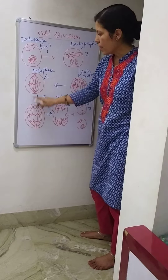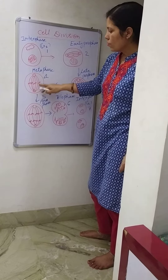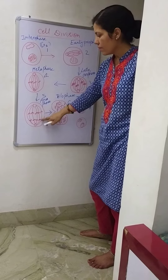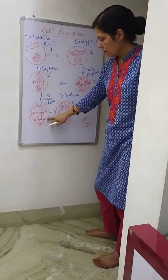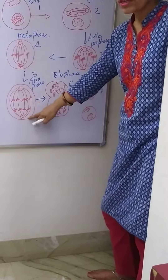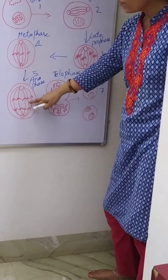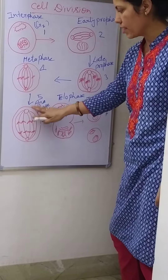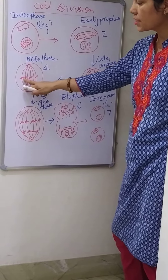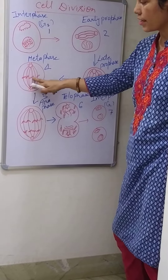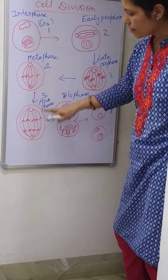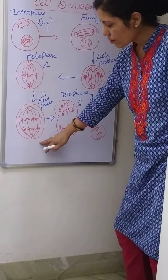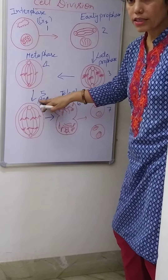Now the chromosomes divide into two parts. One part goes to one corner and the second part goes to the other corner. This gives four chromosomes going to one corner and four to the other corner.